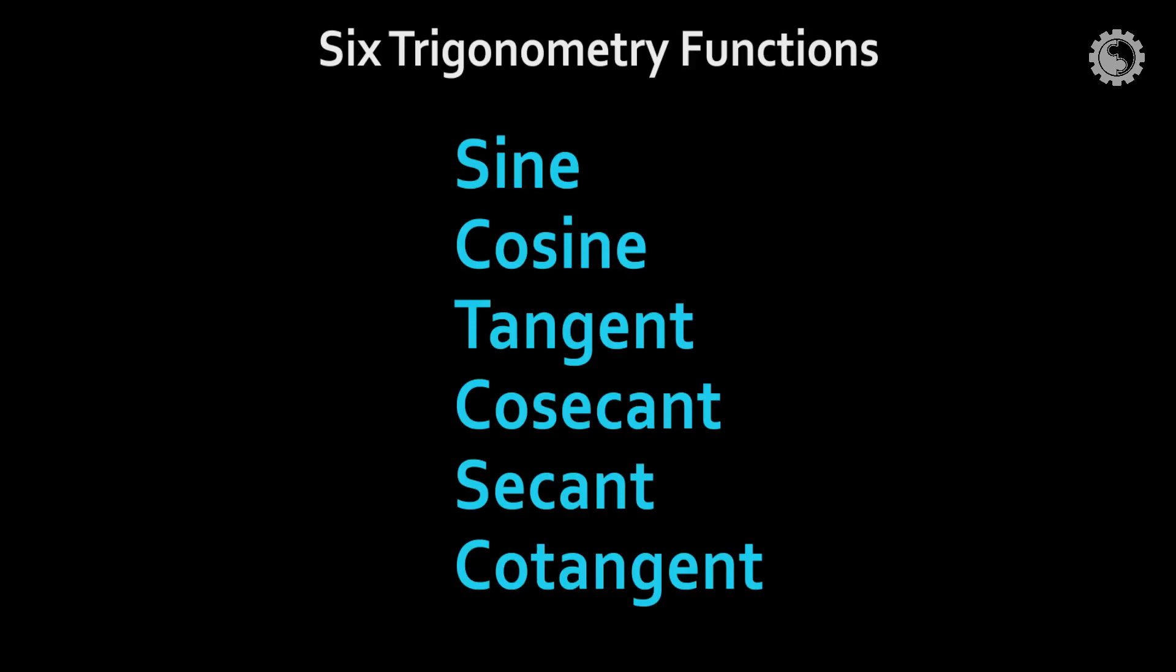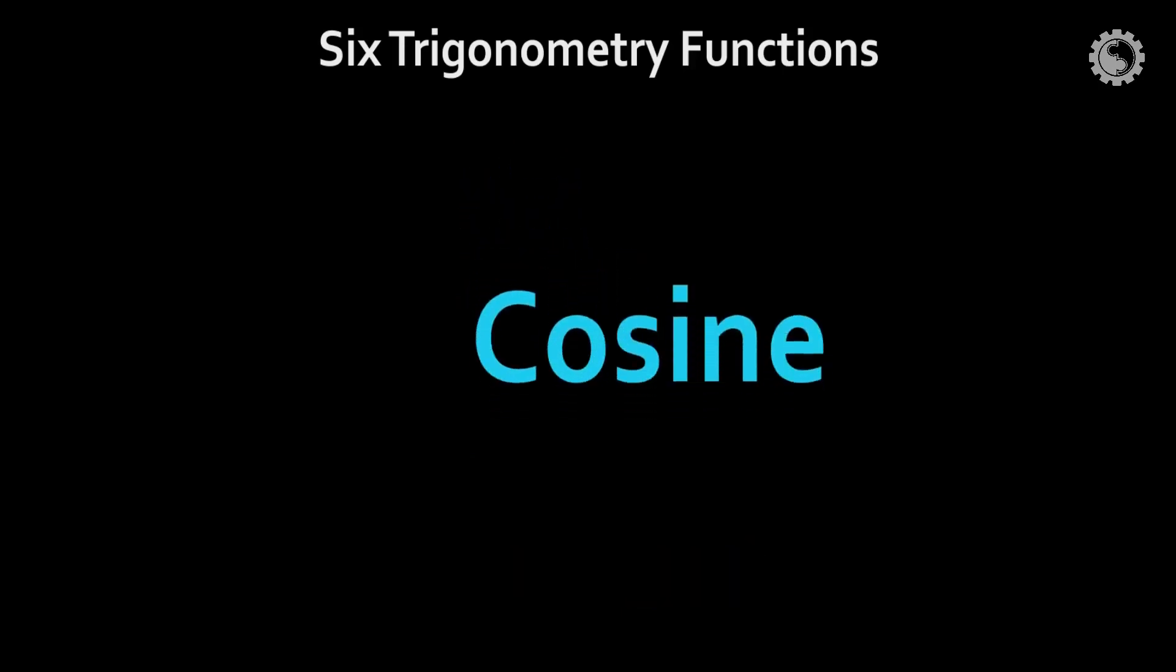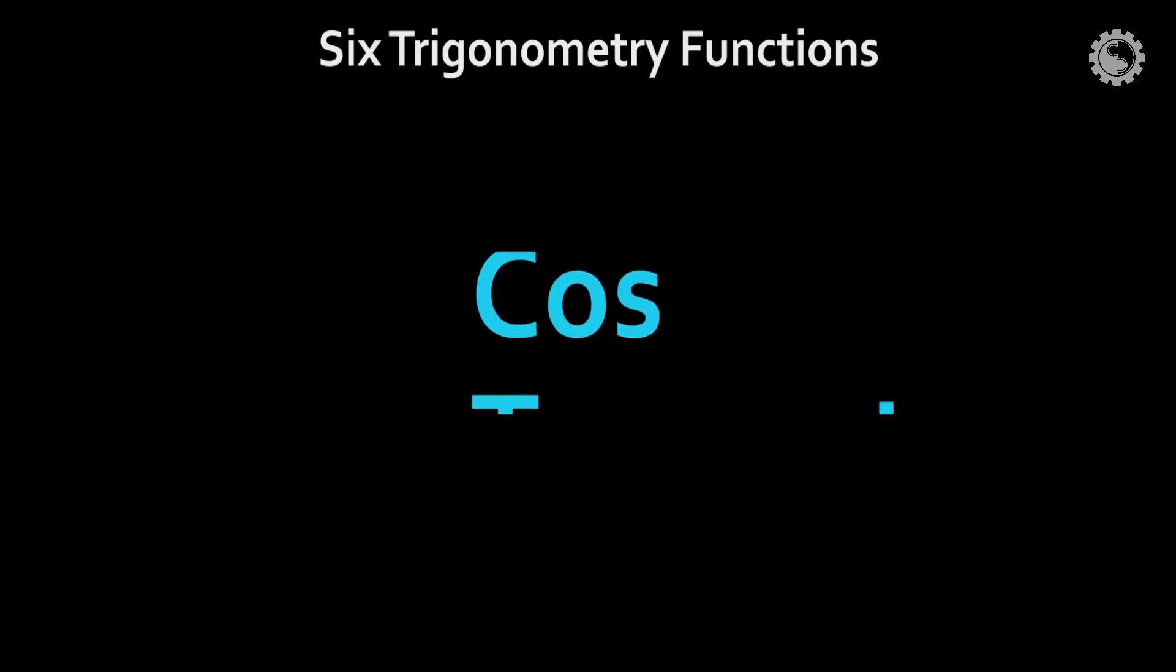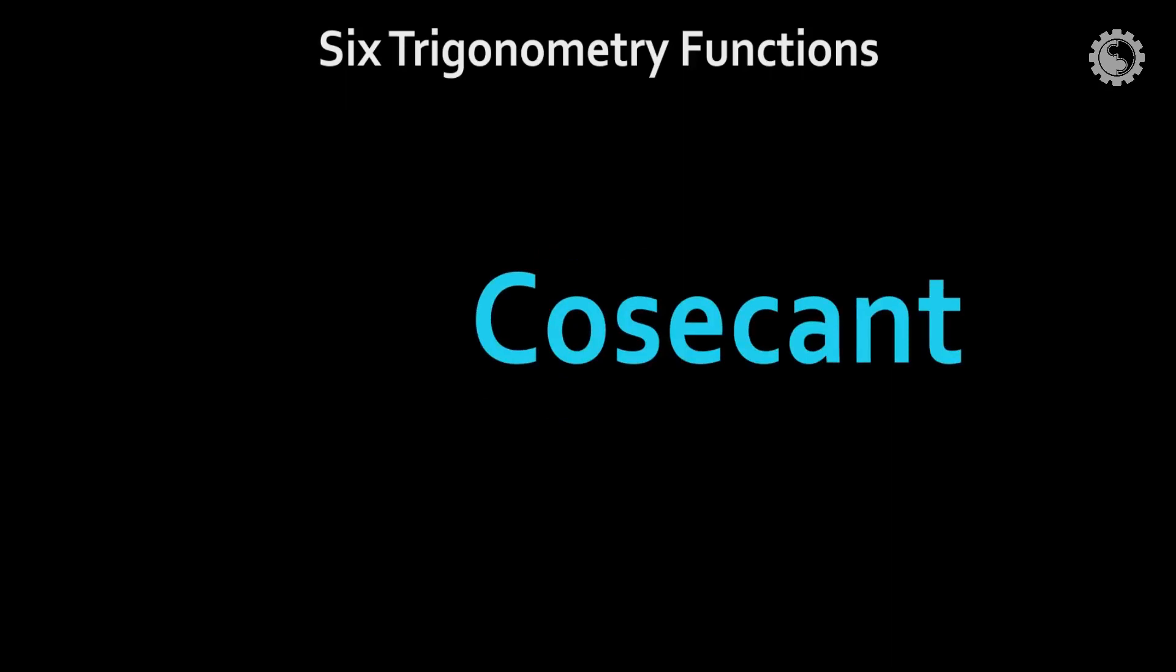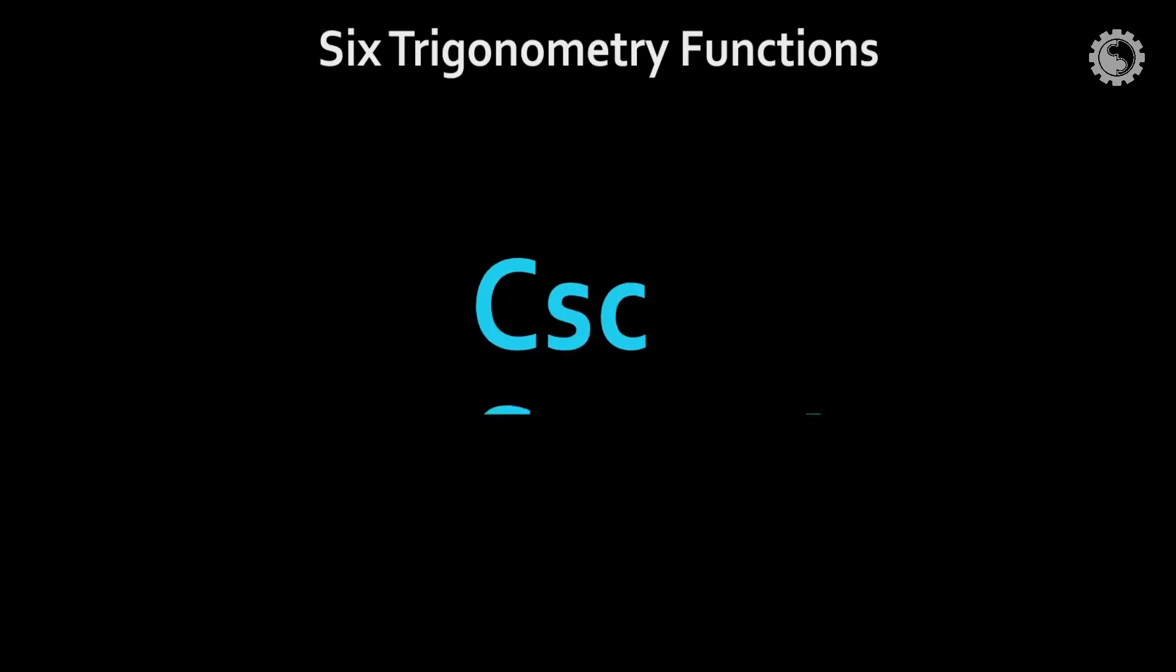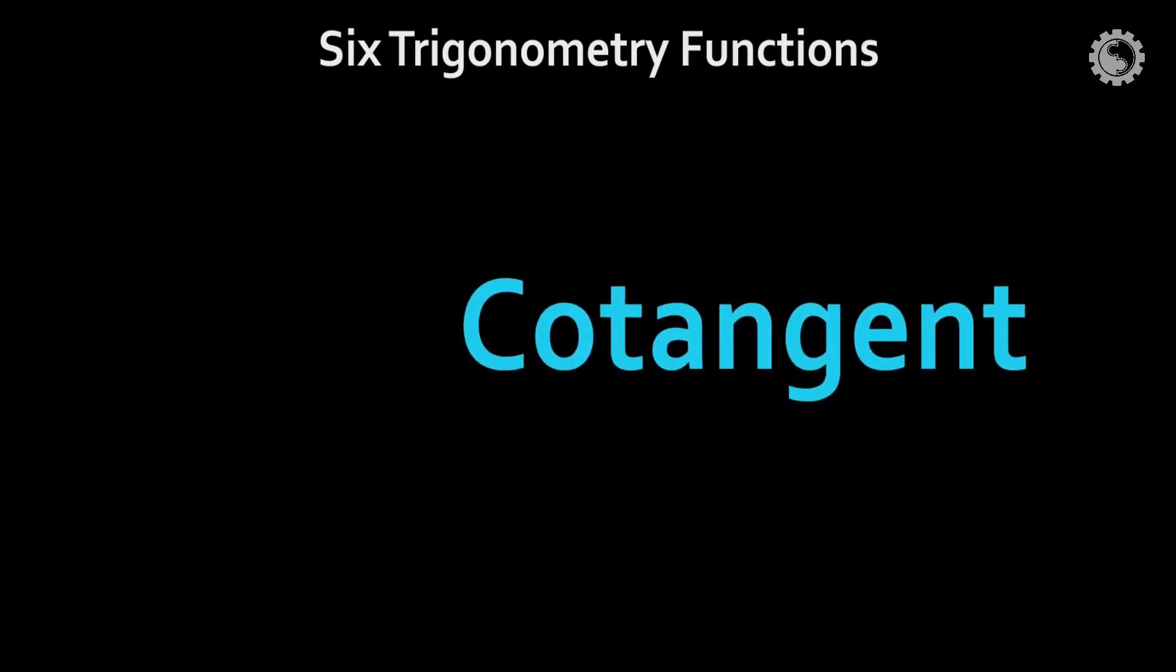For easy access, we make them abbreviations. Sine abbreviated as sin. Cosine abbreviated as cos. Tangent abbreviated as tan. Cosecant is csc. But it was already taken for cosine, so it takes csc. Secant abbreviated as sec. Cotangent abbreviated as cot.